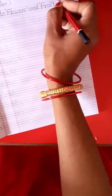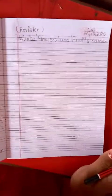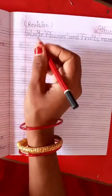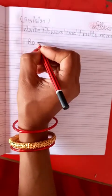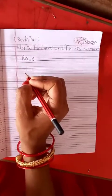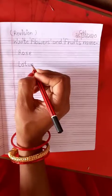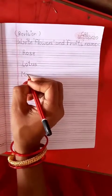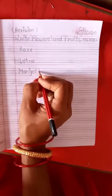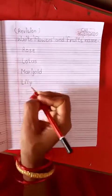Students, today we will write fruits and flowers name and also read them. Clear? Let's read. R, O, S, E. Rose. L, O, T, U, S. Lotus. M, A, R, I, G, O, L, D. Marigold. L, I, L, Y. Lily.